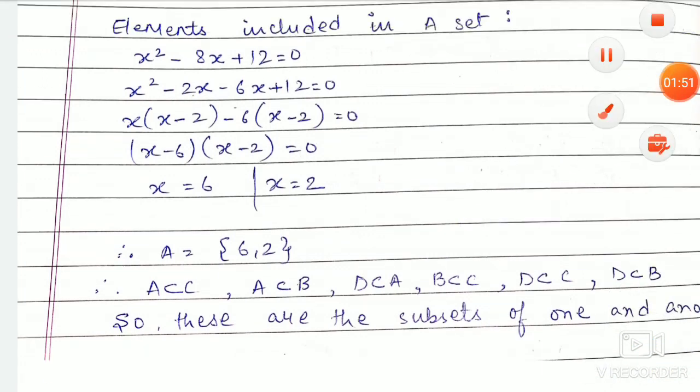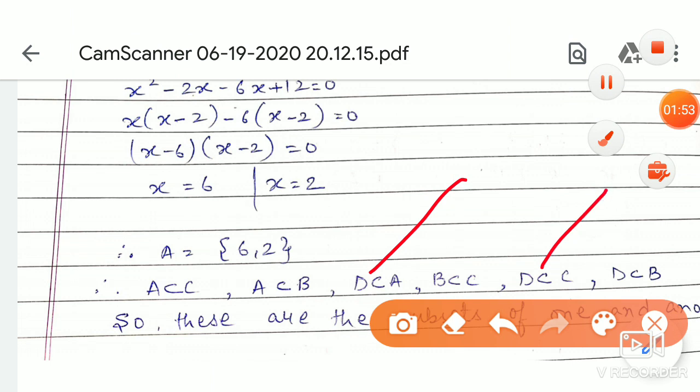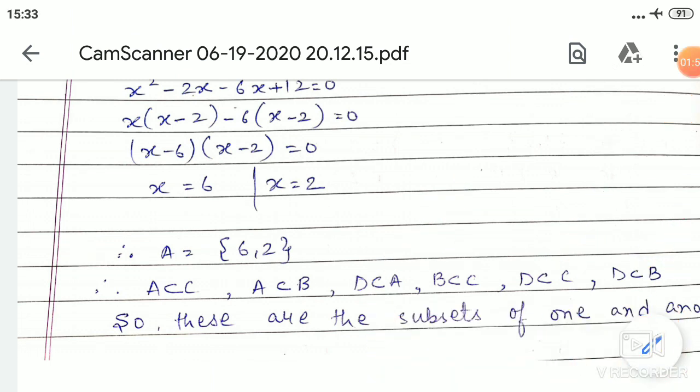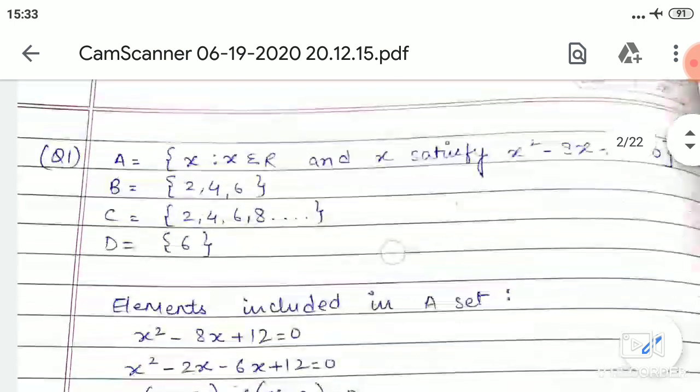D is a subset of A, D is a subset of C, D is a subset of B. Now B has 2, 4, 6. C has these also. That means B is a